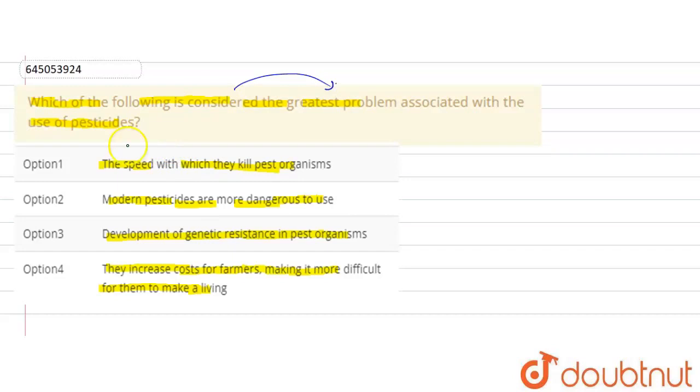So the pesticides will be the mixture of substances of chemical and biological origin which are used by human society. Which is used by human society to repel insects or to repel pests.